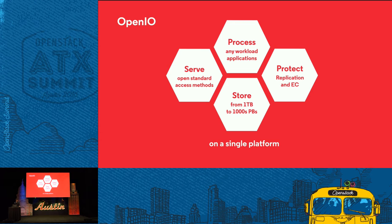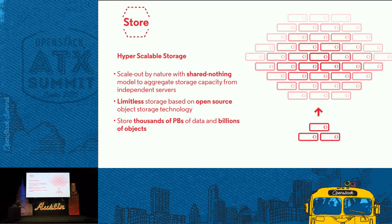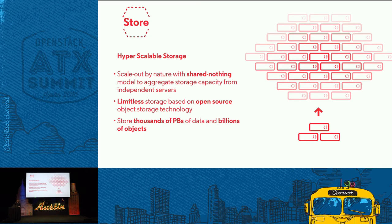So how does OpenIO do it? OpenIO really handles really large scalable storage. You can have literally billions of objects in a single cluster and thousands of petabytes of data. There's a very simple shared-nothing architecture — just bring independent servers into the pool and you can build a limitless storage pool out of regular standard servers.